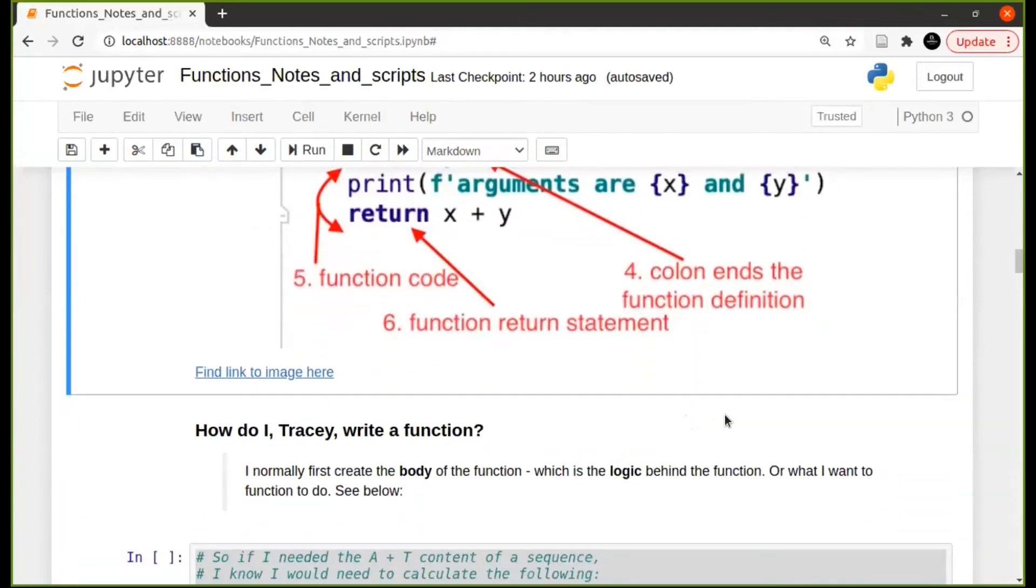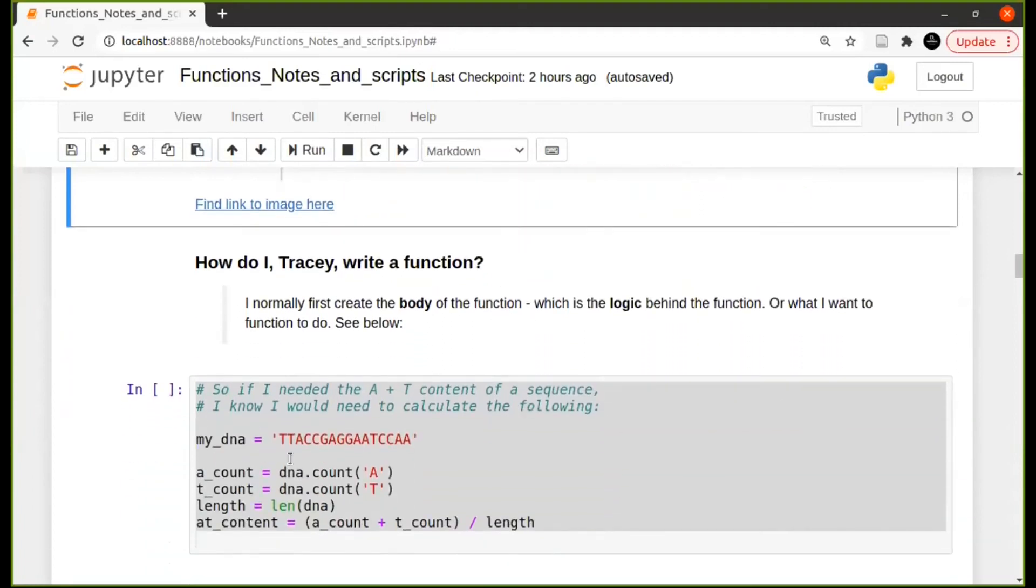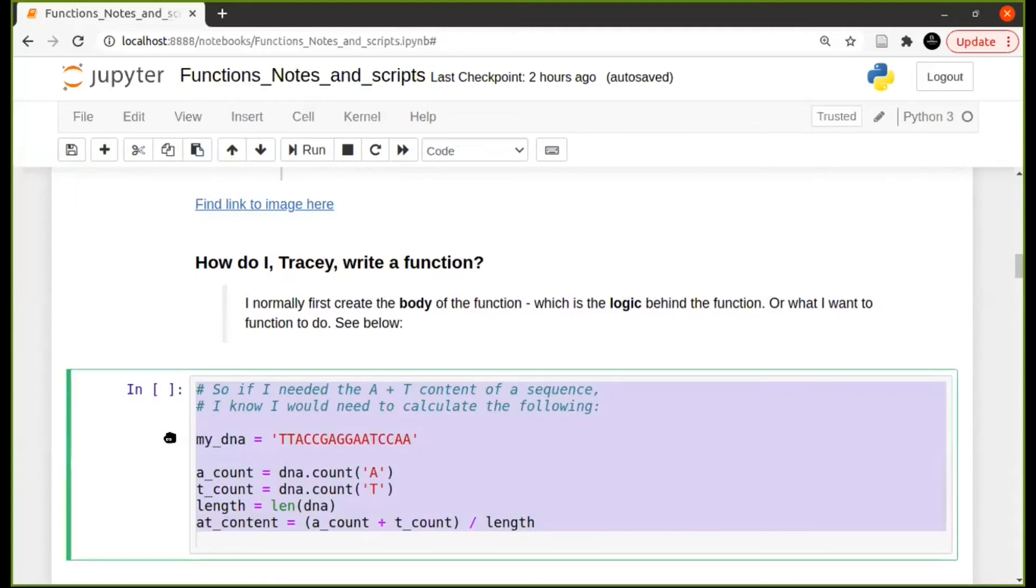Okay, so now how do I write my functions? Obviously, because we first learned how to write a normal piece of script without functions, for me, that becomes the logic of your function. So when I write functions, I always write the body first, I write the logic behind what I wanted to do. So if you take the previous example again, and I wrote it here at the bottom, for example, this is what we did previously, you have a DNA sequence, you want to calculate the A content plus the T content. This part, I will write first what I want the function to do. I'm going to write that part first.